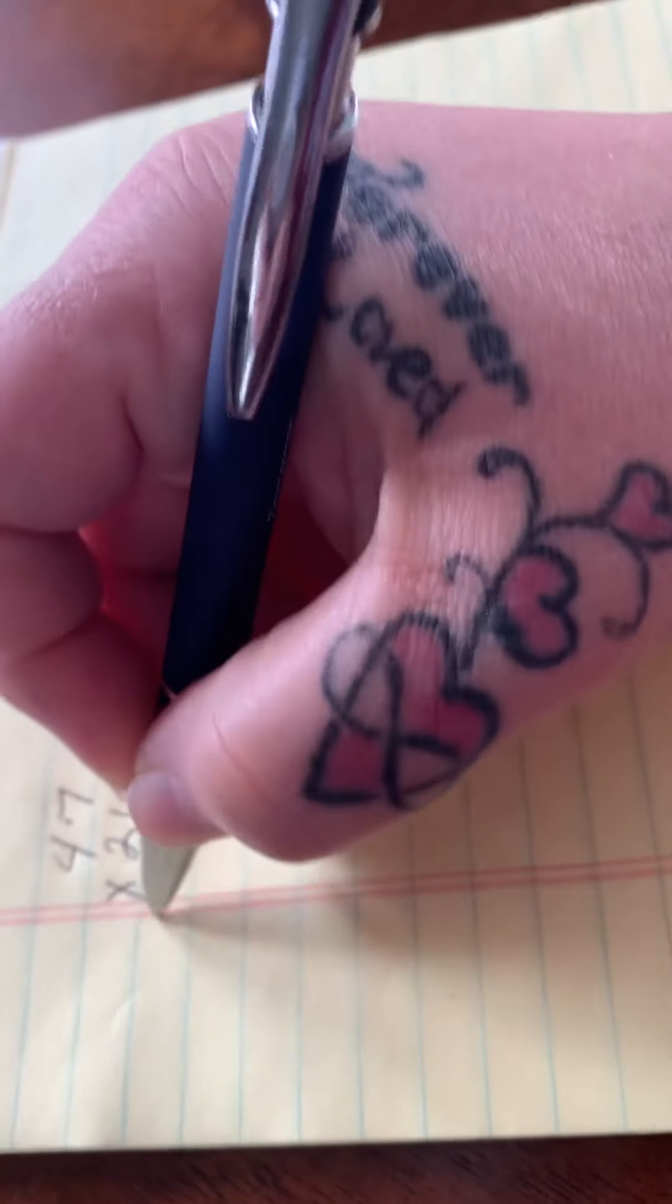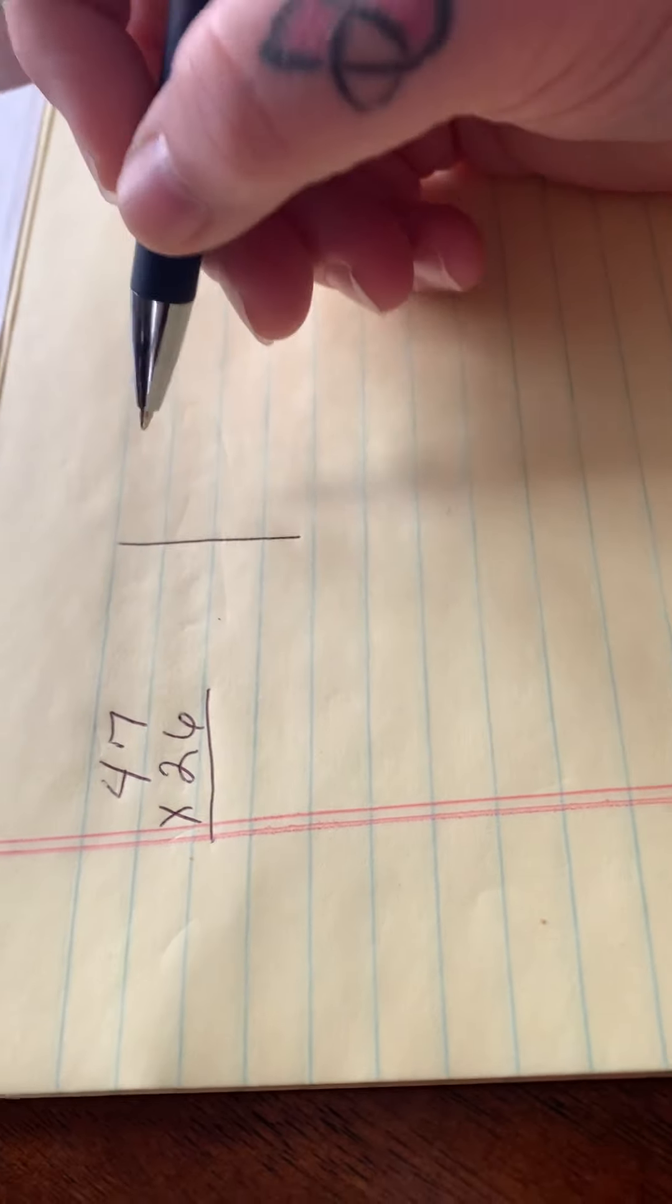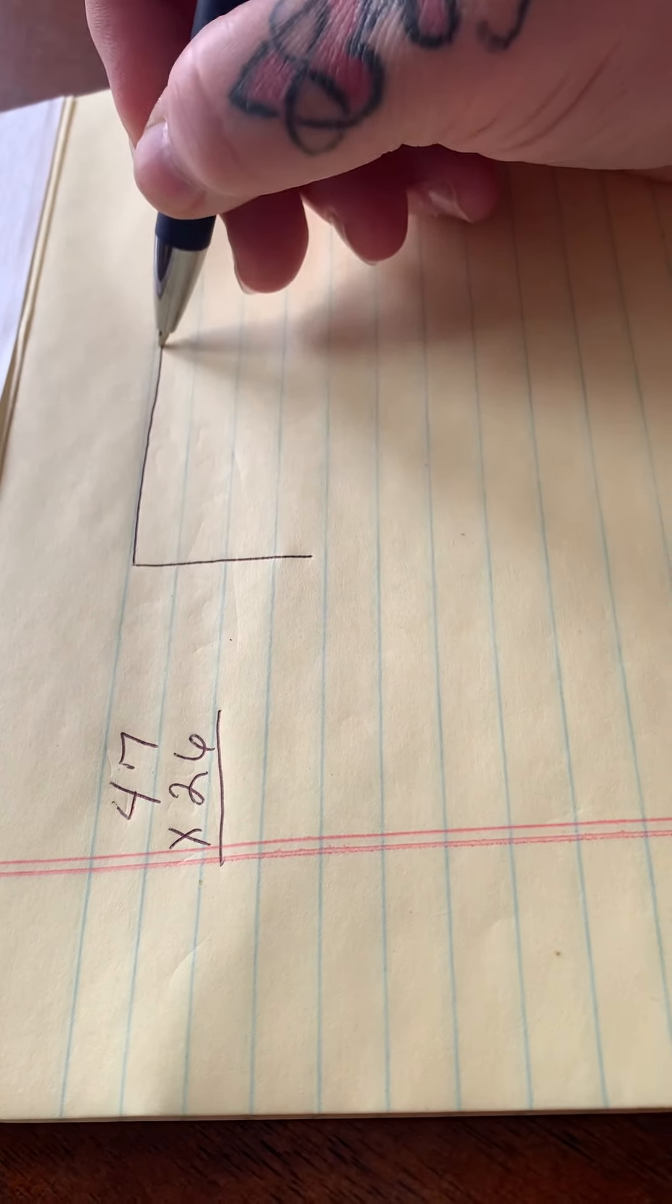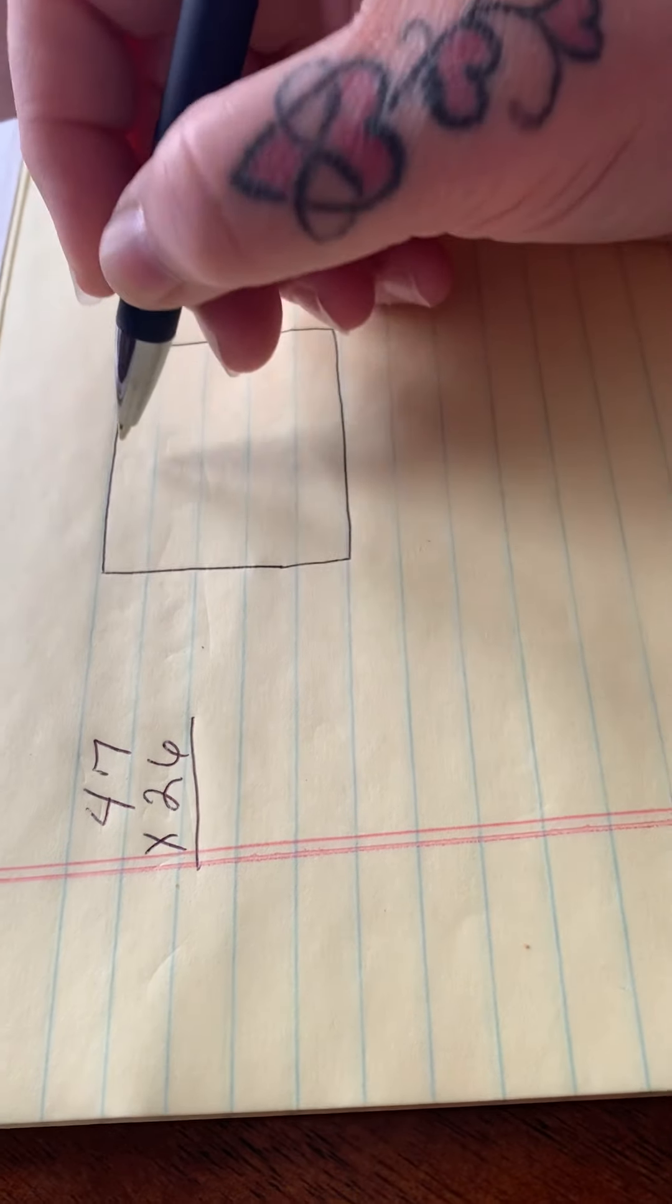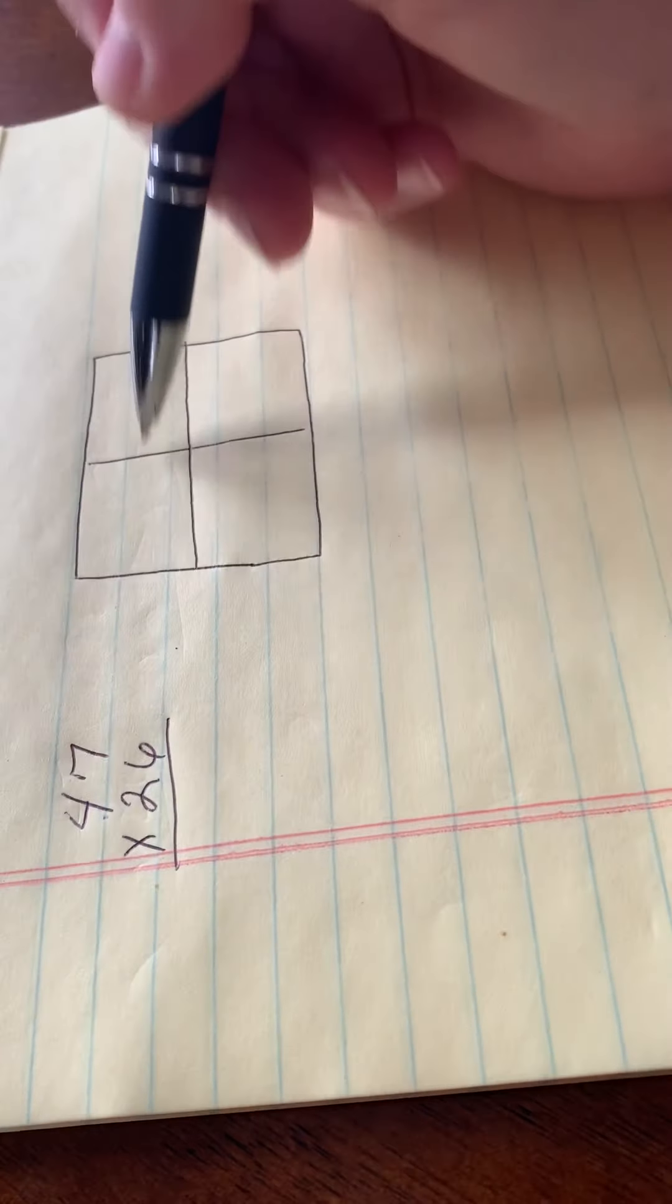So let's start out with the number 47 and let's multiply it by 26. We can do this the traditional way or we can do it our box method. So let's start out with the box method and we're going to draw a two-by-two box because two digits by two digits.